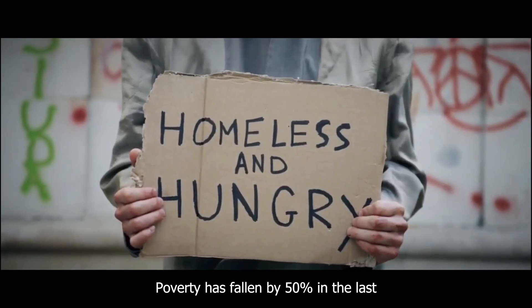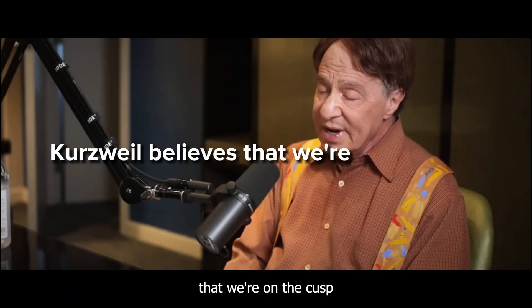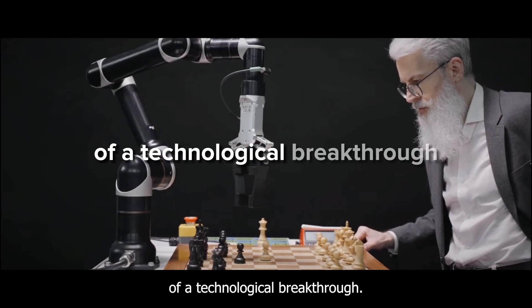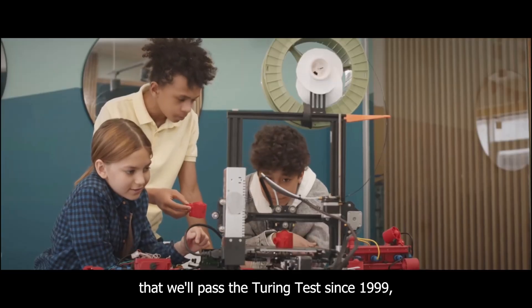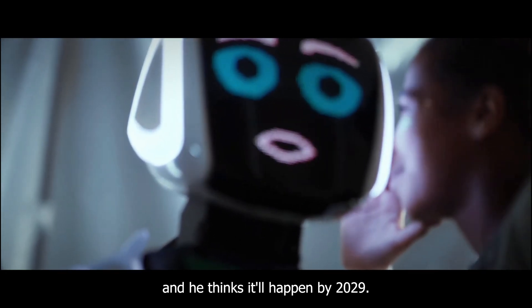Poverty has fallen by 50% in the last 20 years, but most people believe it's gotten worse. However, Kurzweil believes that we're on the cusp of a technological breakthrough. He's been predicting that we'll pass the Turing test since 1999, and he thinks it'll happen by 2029.